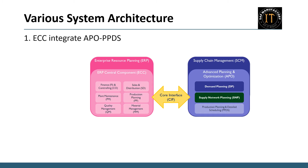Let's talk about ECC integrated with APO PPDS. This integration represents a common architecture preceding S/4 HANA. ECC serves as the repository for core modules such as PP, MM, SD, and FICO. Meanwhile, within the APO system, modules like demand planning, supply planning, PPDS, and GATP are available. The crux lies in the core interface responsible for the seamless transfer of both master data and transactional data between ECC and APO systems. CIF serves as the kingpin for data transfer — whether for essential elements like plants, materials, vendors, or for crucial documents such as plan orders, production orders, and purchase orders.